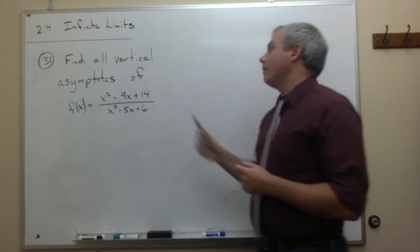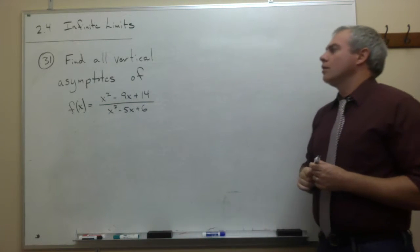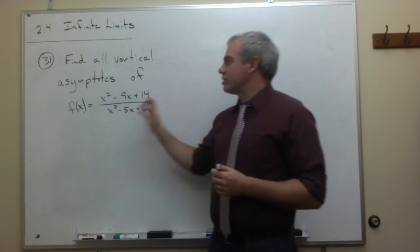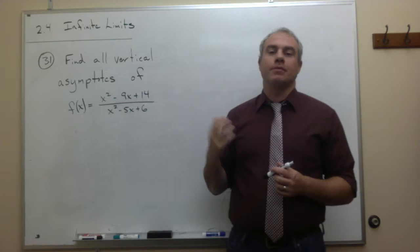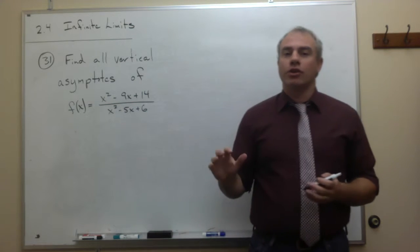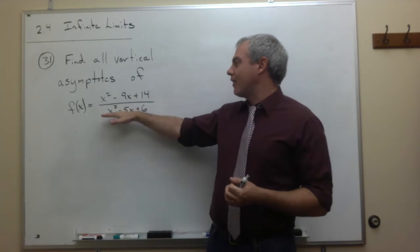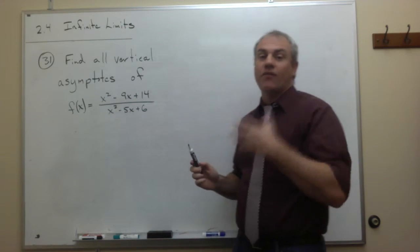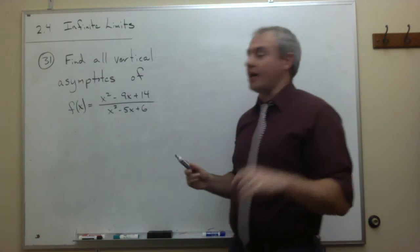Now, when we go about figuring out where there are vertical asymptotes, what I want to do first is let's factor this thing completely, and then we're looking for what are the factors of x that show up on the bottom. So let's factor it completely first and let's see what happens.